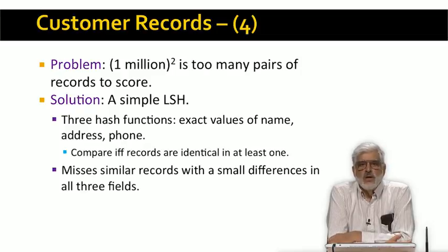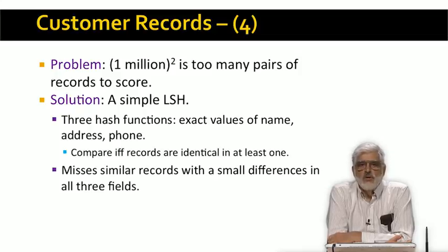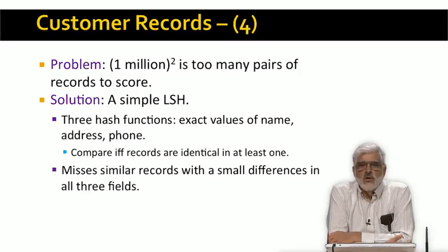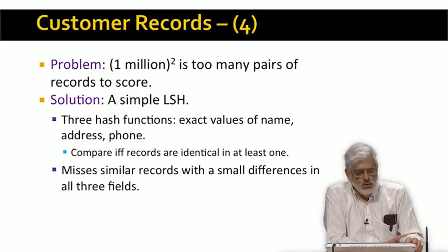We actually did a hand sampling of records and estimated that there were about 2,500 pairs of records that we missed. But that's not bad compared with the 180,000 that we found, and finding those extra 2,500 would probably have cost more than they were worth to either company.